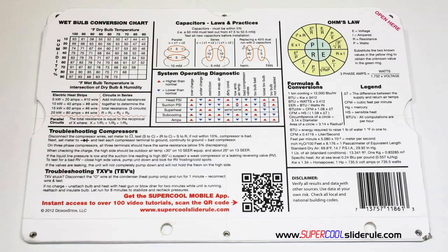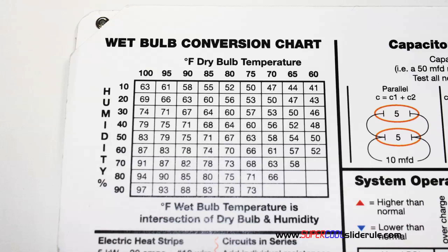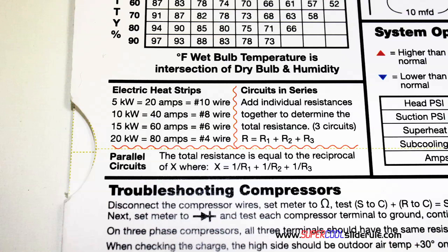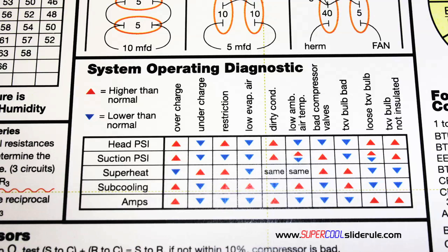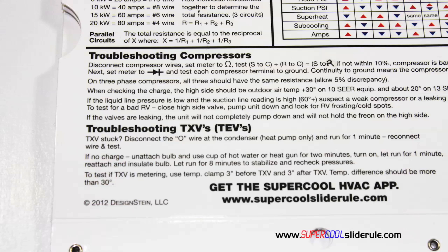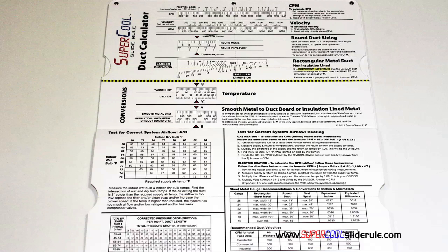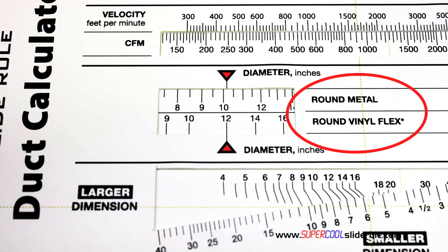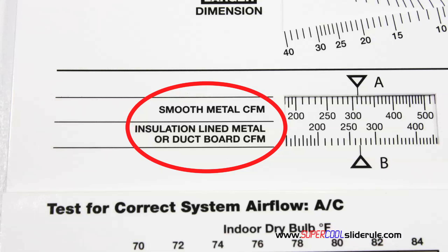The back cover contains required formulas, capacitor rules and practices, a wet bulb conversion chart, how to perform computations on series or parallel circuits, an electric heat strip guide, a complete system troubleshooting diagnostic chart, and how to troubleshoot compressors and TXV. Inside is packed with even more information — it performs sizing of both metal and flexible duct. It has the only direct reading conversion from smooth metal to insulation-lined metal we've ever seen. The majority of technicians have never been taught that if the insulation is on the inside of the ductwork, you cannot size it with a regular duct calculator.